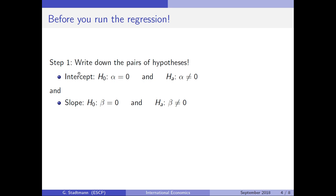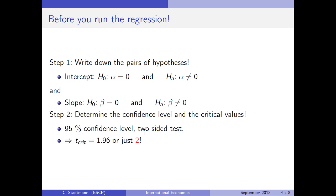Before we run a regression, we have to write down the pairs of hypotheses. For the intercept, the null hypothesis is alpha equals zero and the alternative hypothesis is alpha is unequal to zero. For the slope, the null hypothesis is beta equals zero and the alternative hypothesis is beta is unequal to zero. In a second step, we determine the confidence level and critical values. We want to test at a 95% confidence level with a two-sided test, so the critical t-value will be equal to 1.96, or approximately 2 with enough observations.